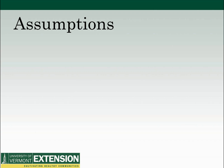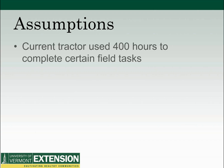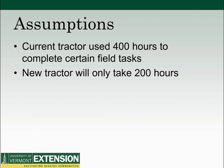Here are our assumptions that we're going to evaluate. We're going to say that the current tractor is used for roughly 400 hours to complete certain field tasks for planting, harvesting, maintaining, and so on of the vegetable crops that we grow. The new tractor will only take 200 hours to do those tasks. This is based on online tools used to look at the field capacity of both tractors, which consistently showed the new tractor would take half the time.